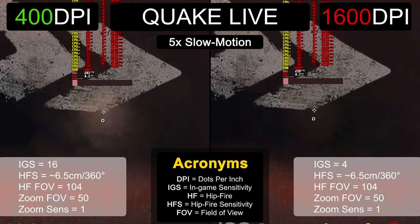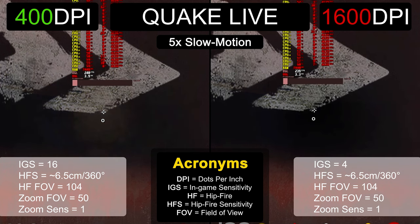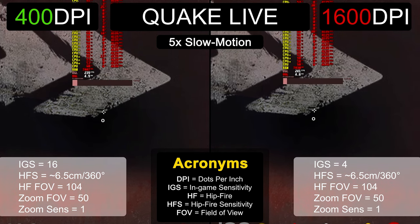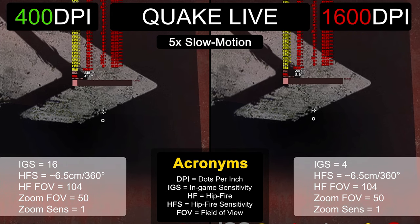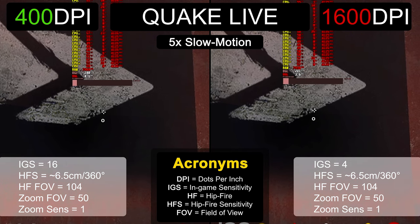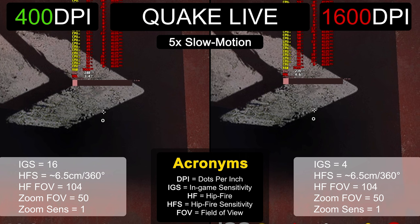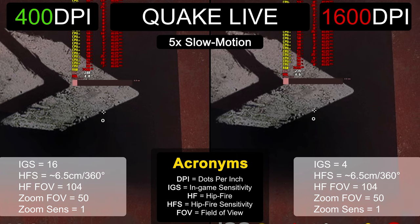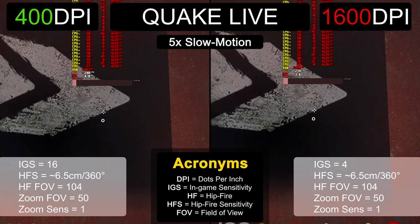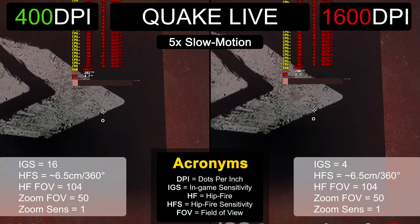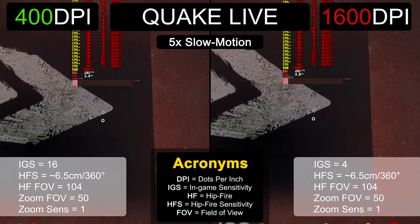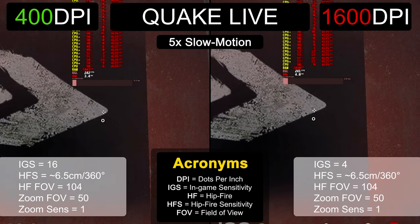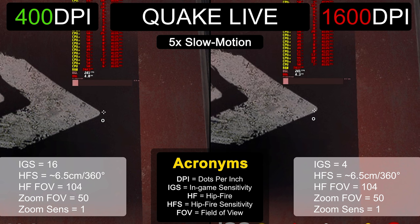I don't have to explain anything else anymore because you can see the same sort of behavior in real life too. So my theory is correct, although there are still some exceptions in other games. In those games, this logic simply doesn't apply, mainly due to variables such as the game engine, the internal source code of the movement mechanics, and other factors.